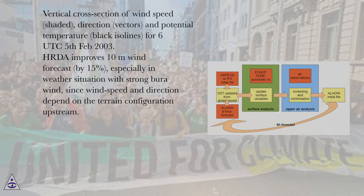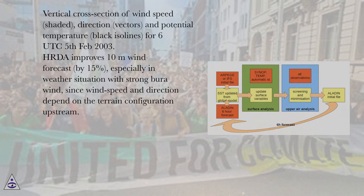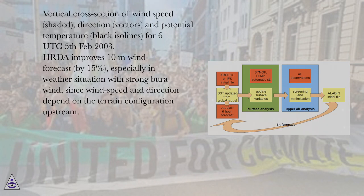Vertical cross-sections of wind speed (shaded), direction (vectors), and potential temperature (black isolines) are shown for 06 UTC, 5 February 2003. HRDA improves 10-meter wind forecast by 15 percent, especially in weather situations with strong bora wind, since wind speed and direction depend on the terrain configuration upstream.